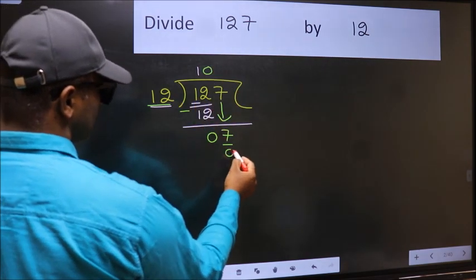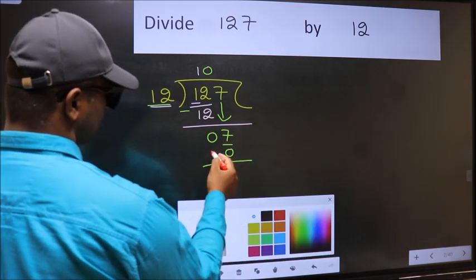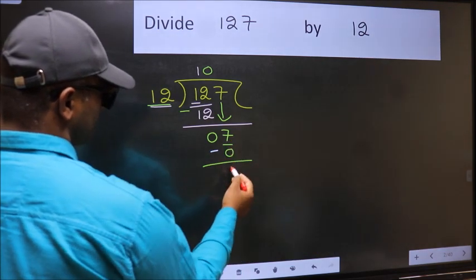So 12 into 0, 0. Now you should subtract. 7 minus 0, 7.